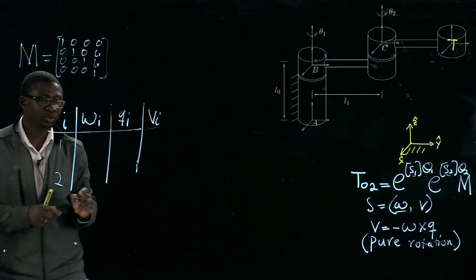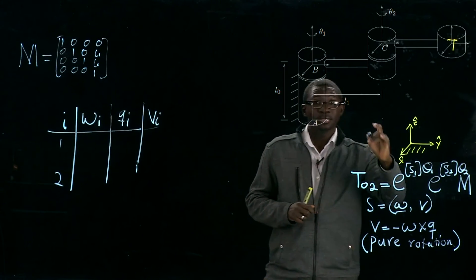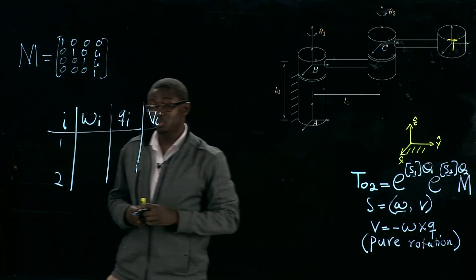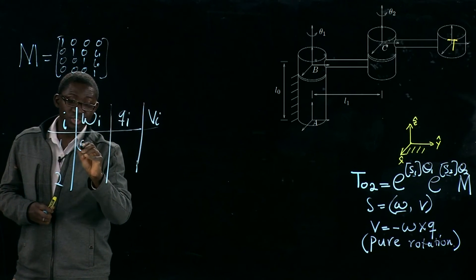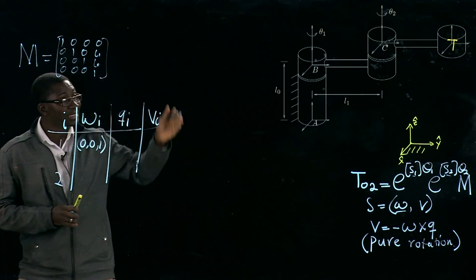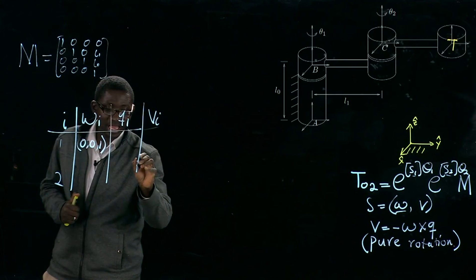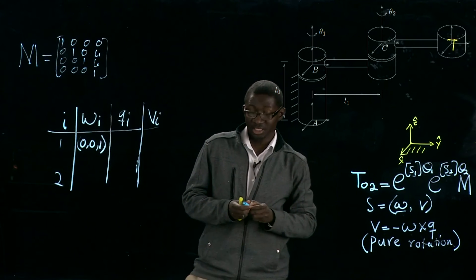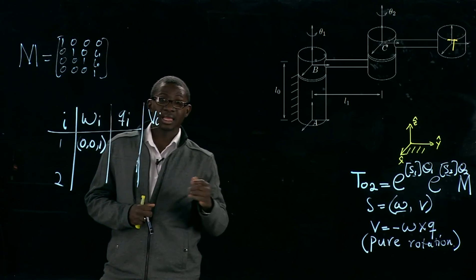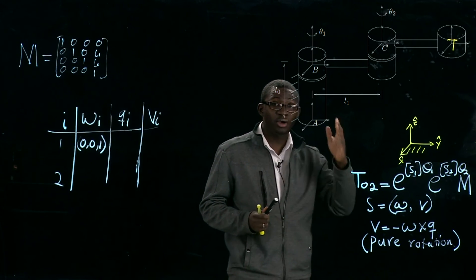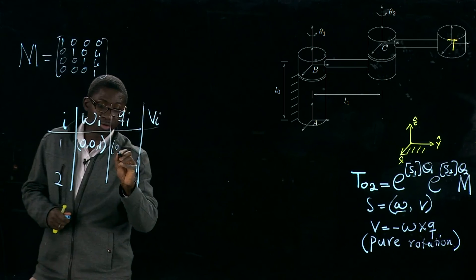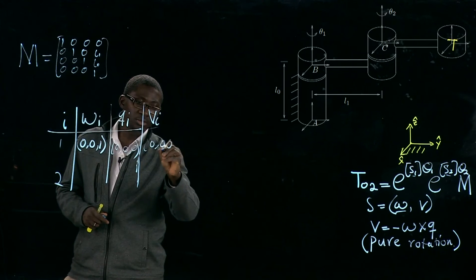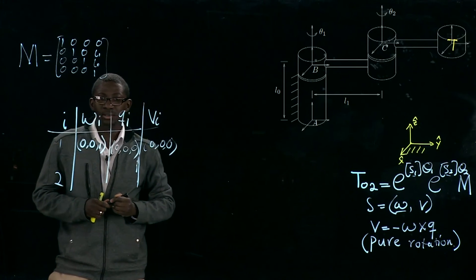Okay, joint 1 and 2. Our omega 1, when the base is fixed, omega 1 is going to be [0, 0, 1] since the axis of rotation lies in the positive z direction. And our q1 is going to be an arbitrary point on there, so I'm going to take it to be [0, 0, 0]. That will give us [0, 0, 0] for our v1.